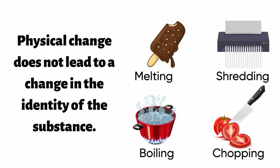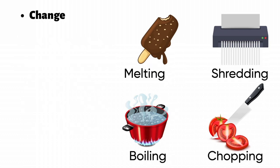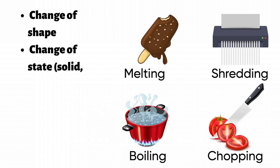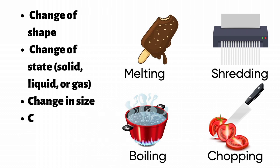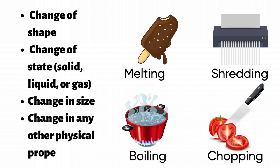Physical change does not lead to a change in the identity of the substance. Many physical changes are reversible, especially those involved in phase change. Possible signs that a physical change has taken place include: change of shape, change of state (solid, liquid, or gas), change in size, and change in any other physical property.